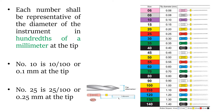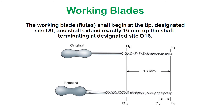Next is the working blade. The working part of the file is also known as flutes. This part of the file is the working blade or flutes. It should begin at the tip, which is designated as D0, and should extend up to 16 mm.